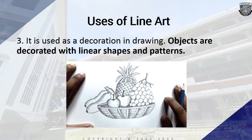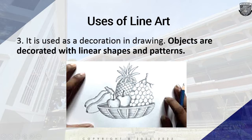Hatch lines are used to create the shadow of a particular drawing. Hatch lines go in one direction while cross hatch lines use a cross on two or more directions. This is an example of a hatch line going in one direction, and this one uses cross hatch lines going in multiple directions.